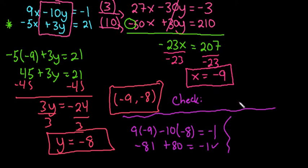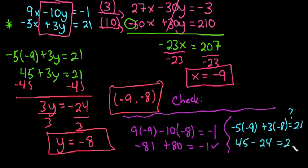If we check this second equation, I would take negative 5 times negative 9 plus 3 times negative 8, and we want to see does this equal 21. So we would end up with 45 minus 24, which, yes, it does equal 21.